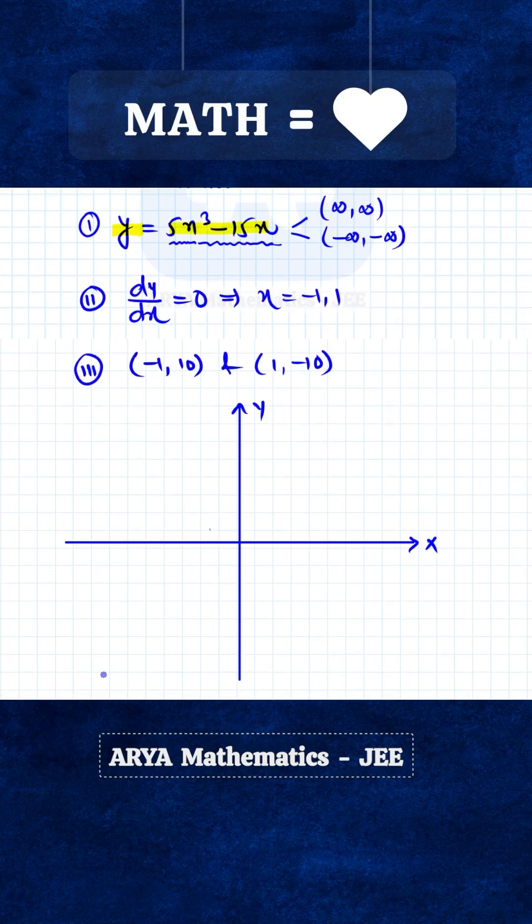When x is minus infinity, y is minus infinity, and so the graph will start in the third quadrant. There are two turning points: minus 1 and plus 1. When x is minus 1, y is plus 10. When x is plus 1, then y is minus 10. Also, there is no constant term in this equation, so the graph will pass through the origin.